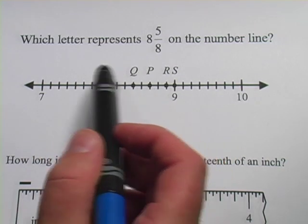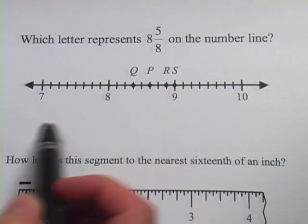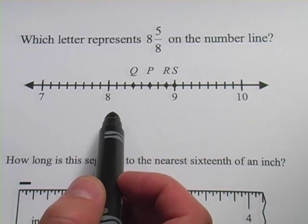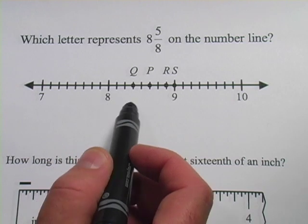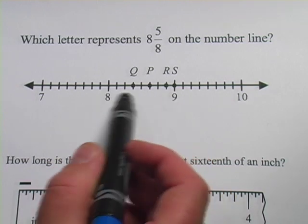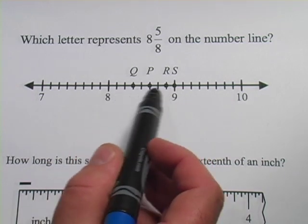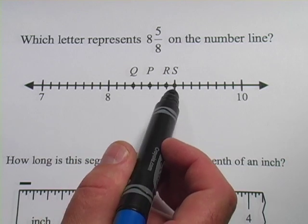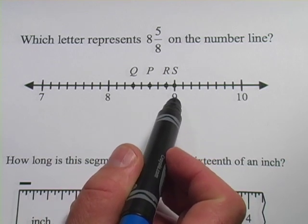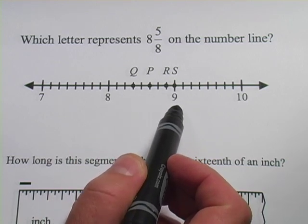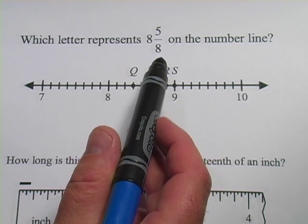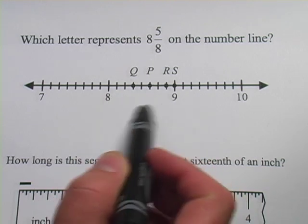And the question here is, which letter represents 8 and 5/8 on this number line? Well, 8 and 5/8 is something bigger than 8 and something less than 9, so it's going to be in here somewhere. That's where all the letters are, I guess. Although we could probably rule out S because that looks like it would be 9 exactly. The trick here when you've got a fractional part is to figure out what the scale is on the line.